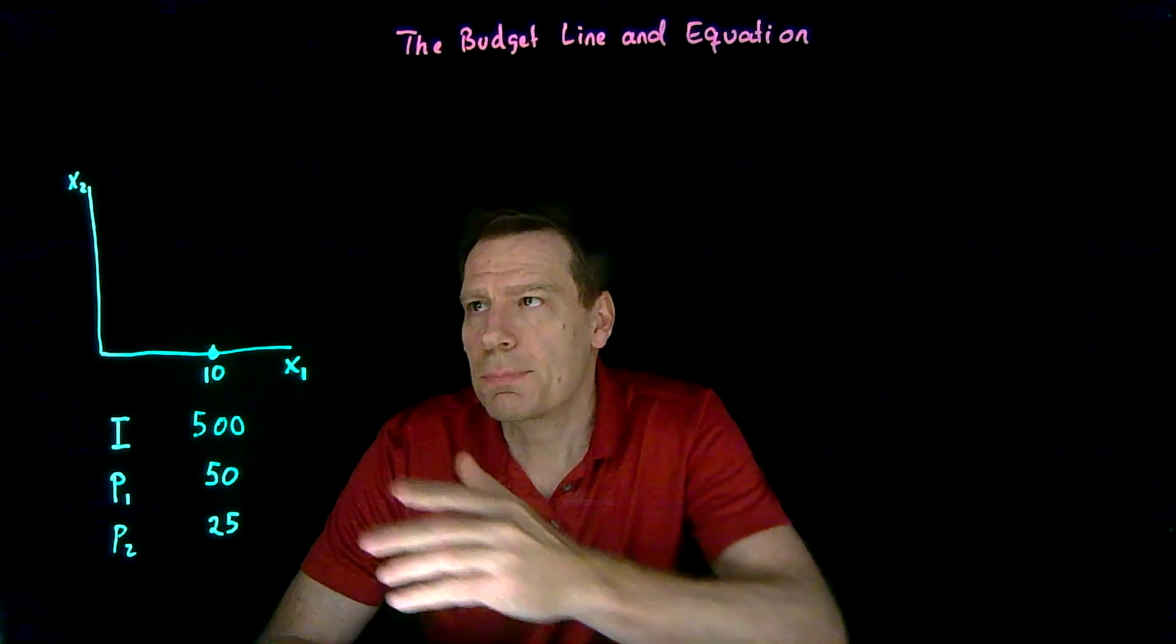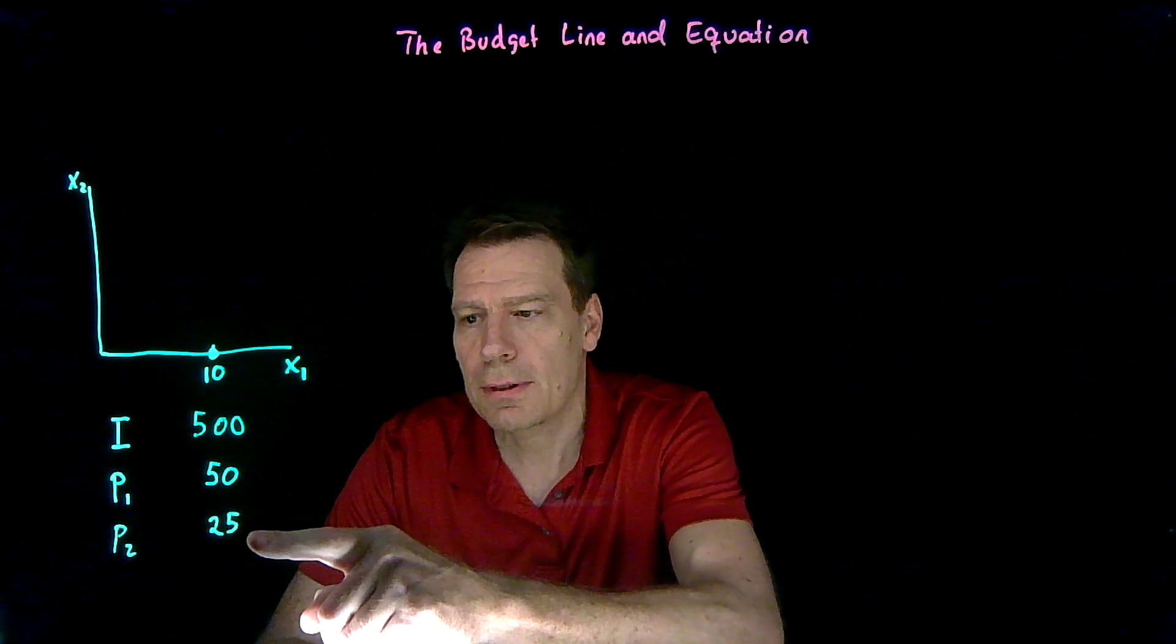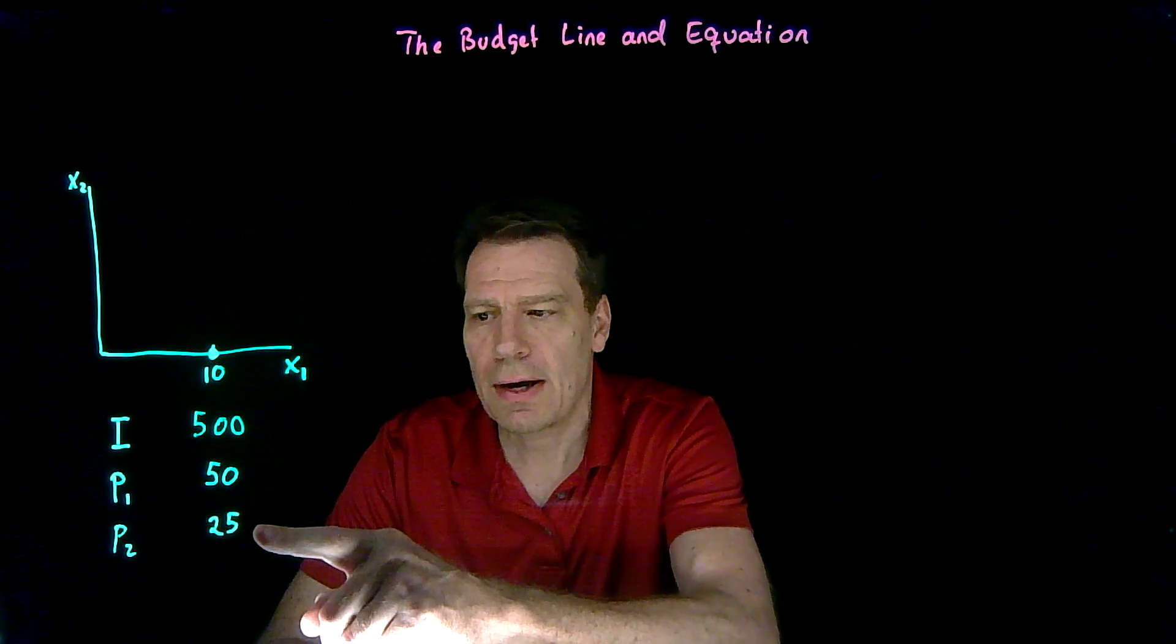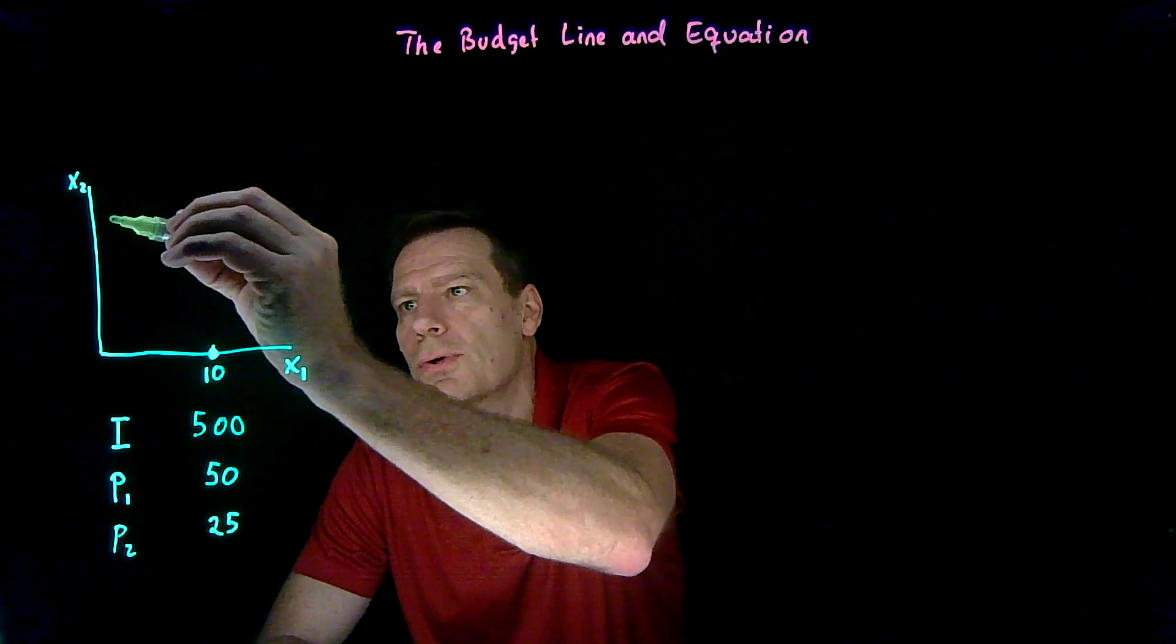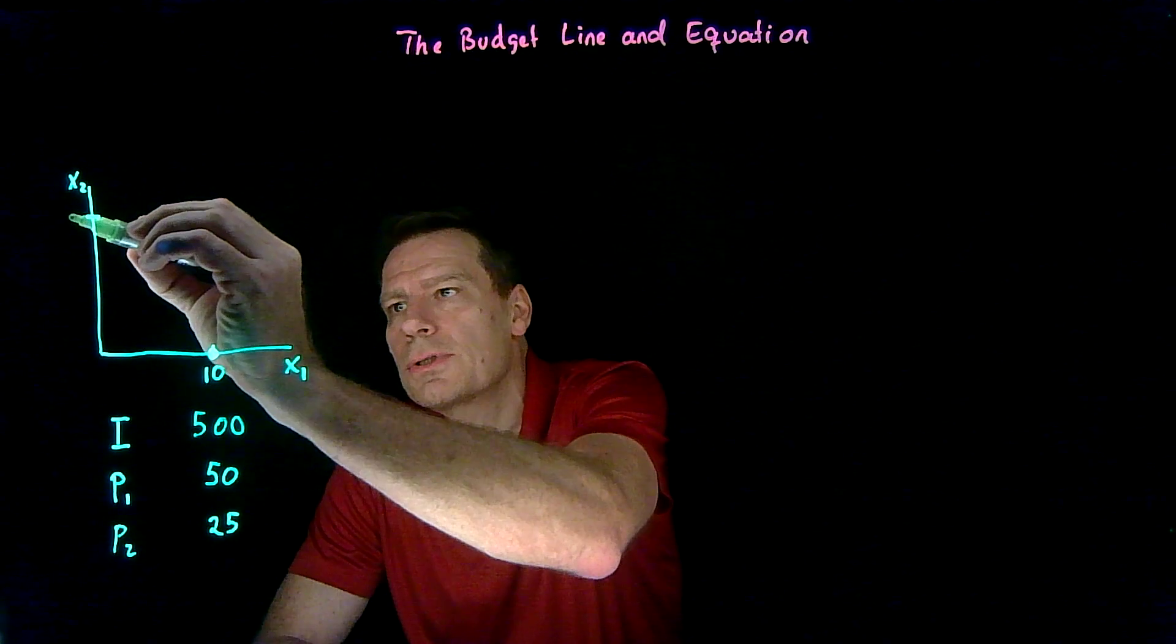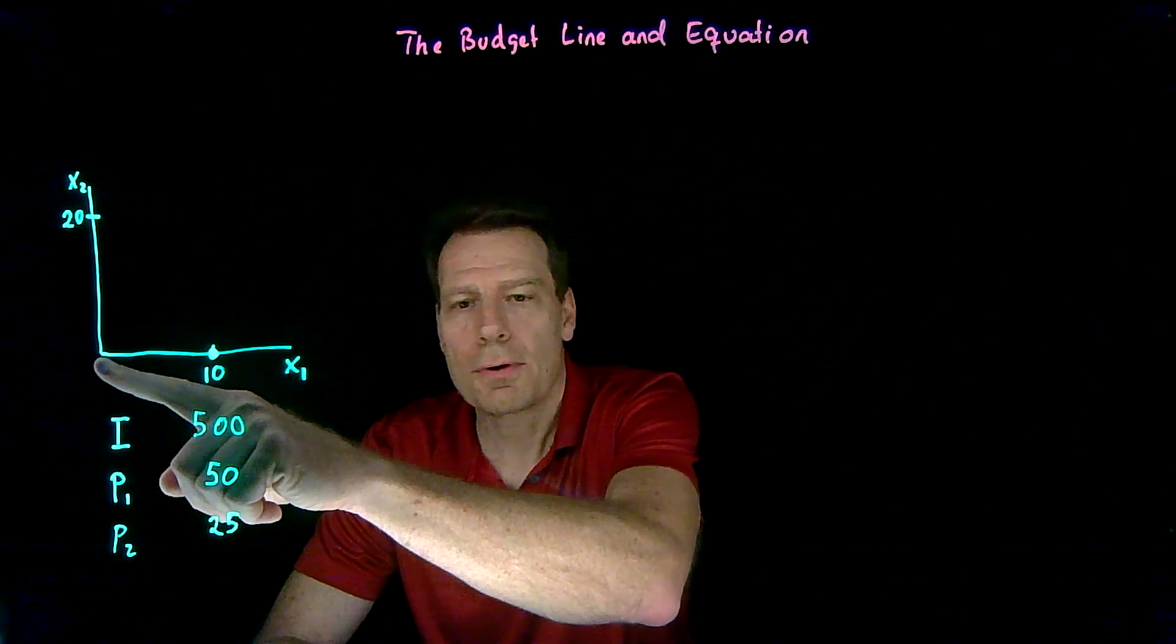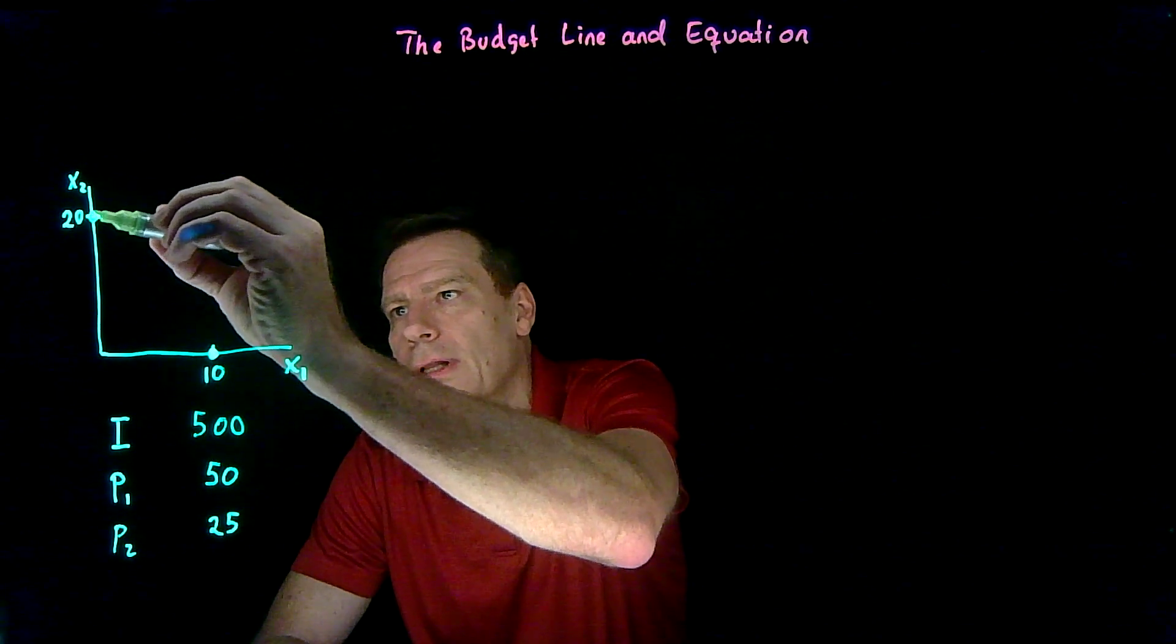Similarly, we can ask, what if you spent all your money on good two? You have $500, it costs $25 to buy a good two. So 500 divided by 25 gives us 20. So the most you could buy of good two is 20 units. And if you do that, you have no money left over for x1. So you'd have 0 of x1, and the bundle would lie on the vertical axis.